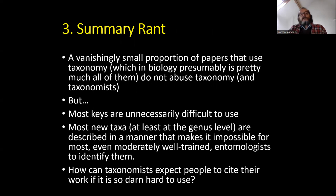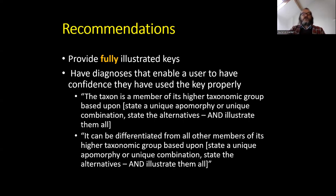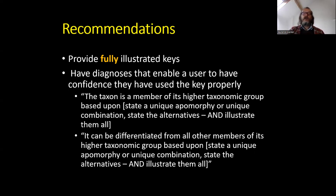To summarize: almost no papers that use taxonomy avoid abusing taxonomy and thereby taxonomists. But most products of taxonomic work are unnecessarily difficult to use. Most new taxa at the generic level are pretty difficult even for well-trained entomologists to identify. So it's not surprising that if taxonomic work is so difficult to understand, most people don't want to cite it. Recommendations: provide fully illustrated keys; have diagnoses that really give the user confidence they've made the right decision — 'it's a member of this higher taxonomic group because it's got this characteristic, here's a picture, this is what the alternative will look like, it can be differentiated from all other members of this group based upon this and this.' Illustrate everything.